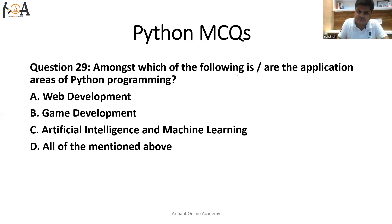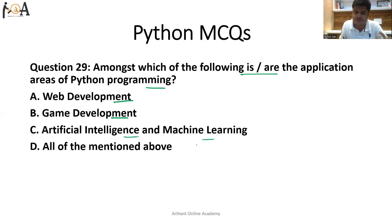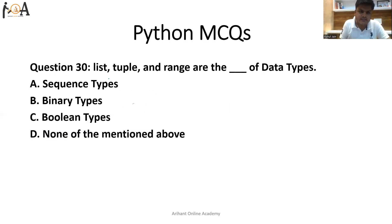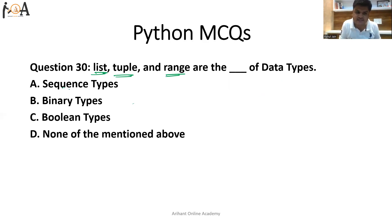Question 29: which of the following are application areas of Python programming? Option A is web development, option B is game development, option C is artificial intelligence and machine learning, option D is all of the above. Python can be used in all these areas, so option D is the correct answer. Question 30: list, tuple, and range are which type of data types — sequence, binary, or boolean? They are sequence types, so option A is correct.